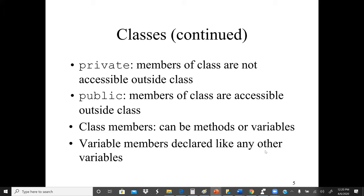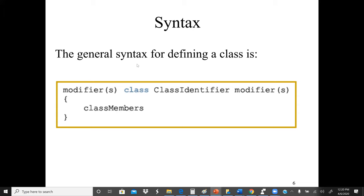Class members can be either methods or variables. A class consists of two items: the characteristics and the behavior, which are the variables or data, and the methods. The general syntax for defining a class uses modifiers — either private, protected, or public — followed by the keyword 'class', then the class identifier (name), and then an open and close brace containing the class body where we declare variables and methods.